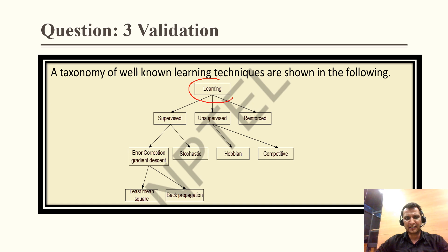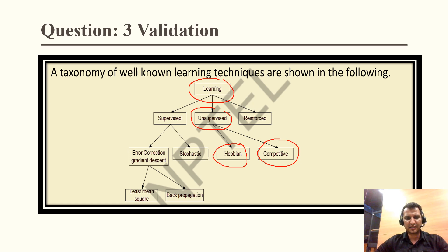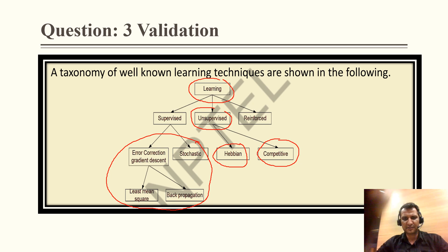In unsupervised learning there are Hebbian learning and competitive learning. Under supervised learning there are error correction, gradient descent, stochastic, back propagation, and least mean square. This portion can also be asked in the final exam, so you should prepare accordingly.